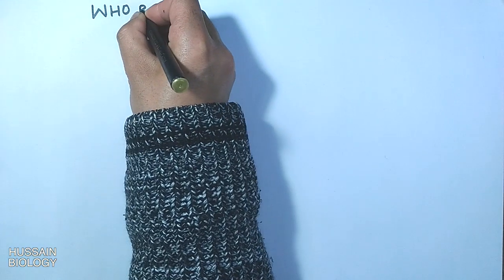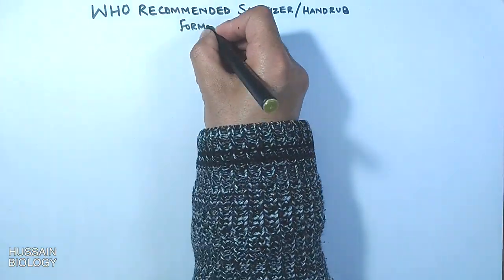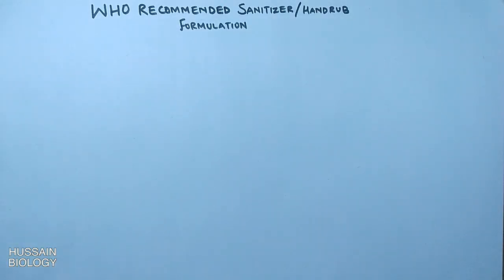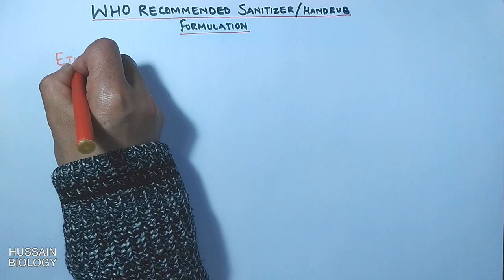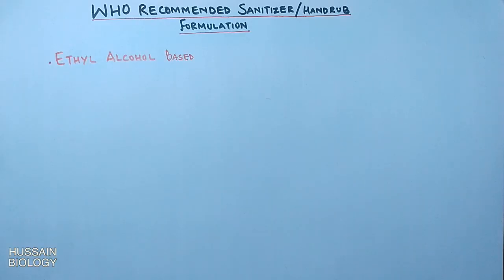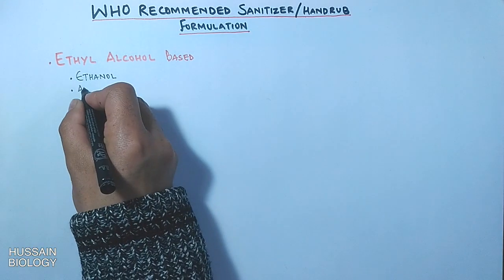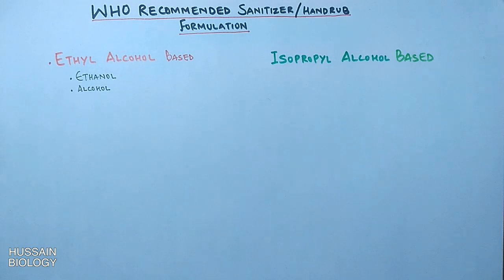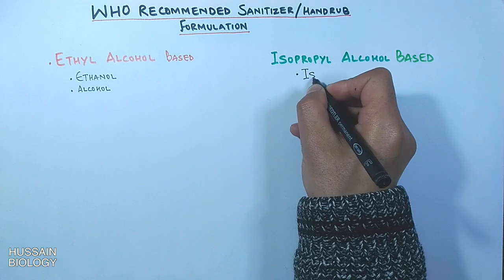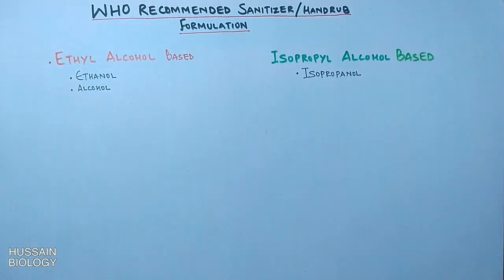In this video we'll be discussing how the WHO recommended sanitizer or hand rub is made. We will see its formulation with calculations for different concentration percentages. The first is the ethyl alcohol-based formulation, also called ethanol-based. The second is the isopropyl alcohol-based formulation.